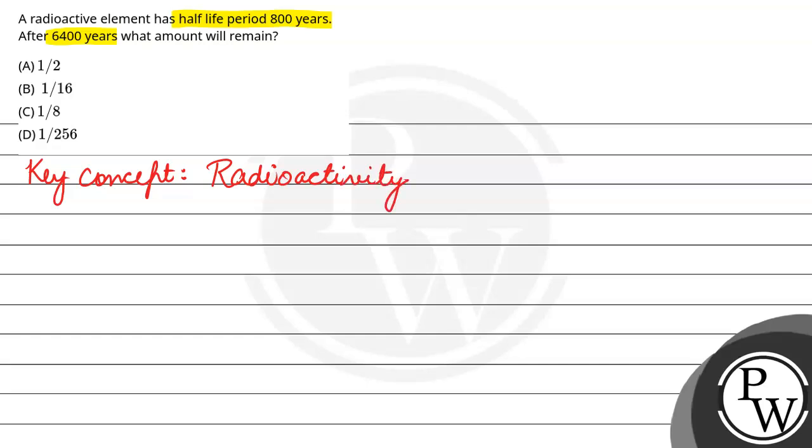Now, the question gives us t half and t time. T half is given as 800 years, and t time is given as 6,400 years.